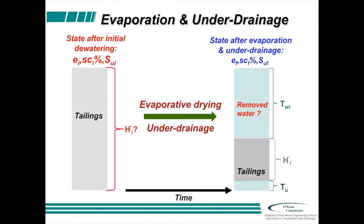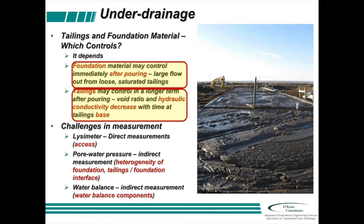We've gone from tailings and evaporation to evaporative water — now we've got to figure out underdrainage. Initially, underdrainage is controlled by the underdrainage permeability condition, the hydraulic characteristics of that material, the initial pore water conditions, and the permeability. That's very early on. Pretty quickly you consolidate that material, and it's the consolidation characteristics and permeability of the tailings material that will control your underdrainage condition.